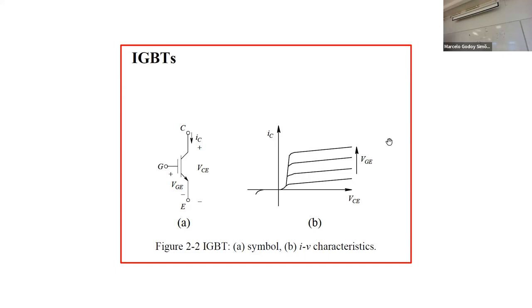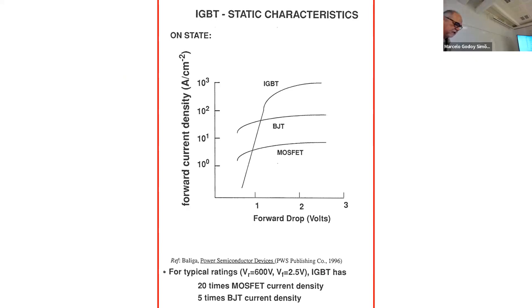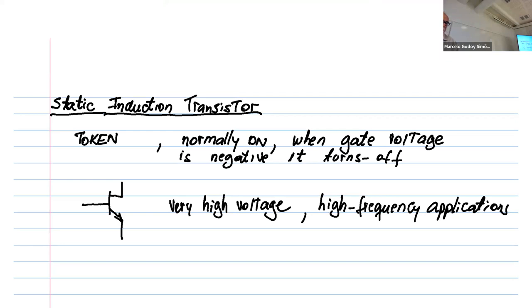There was also the static induction transistor, made in Japan, which was important some years ago but is no longer available — the company closed. The static induction transistor was normally on; you applied voltage to turn it off, similar in concept to a vacuum tube. A vacuum tube has plasma in glass, and current flows through it by default — you apply a control voltage to reduce the current.